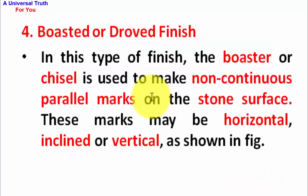Number 4, Boasted or Dragged finish. In this type of finish, the boaster or chisel is used to make non-continuous parallel marks on the stone surface. These marks may be horizontal, inclined or vertical. As shown in figure.